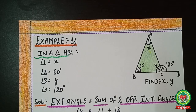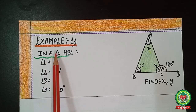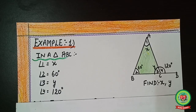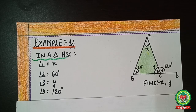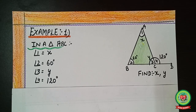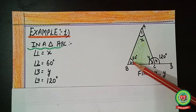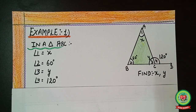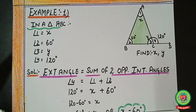In triangle ABC, angles 1, 2, 3, and 4 are given. Which property can we apply here? Since an exterior angle is given and one interior angle is given, and we need to find the other interior angle, we apply the exterior angle property — the same type as in type 1 questions.